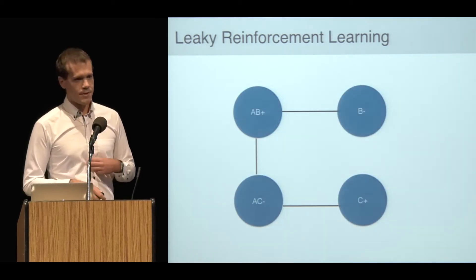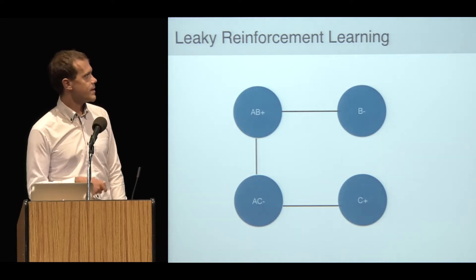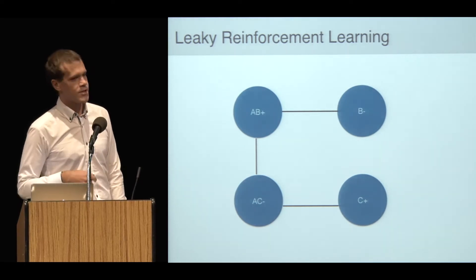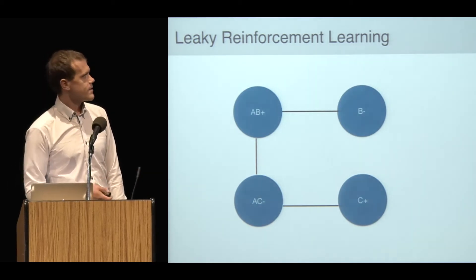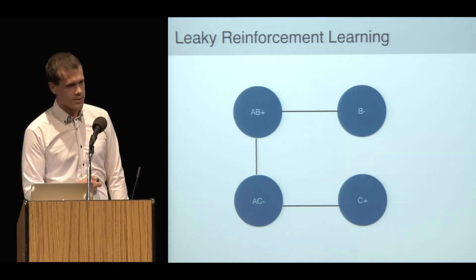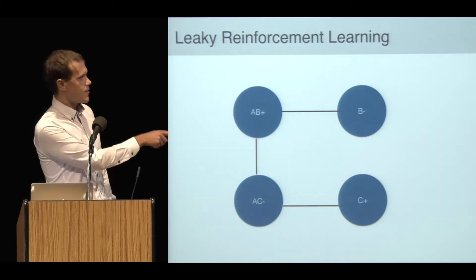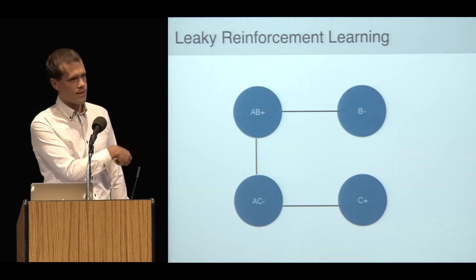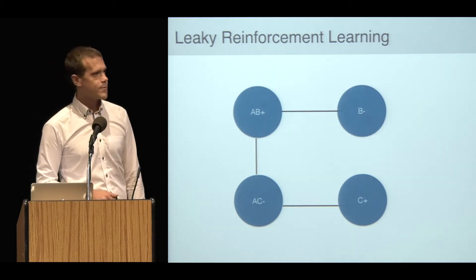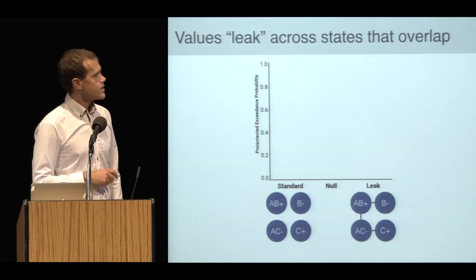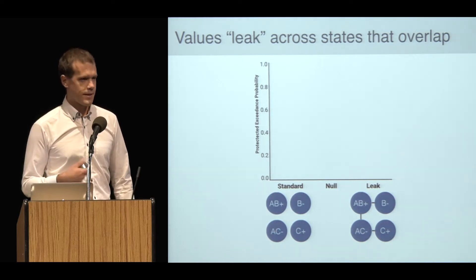You need to keep these conjunctions and features separate and people might not be that good at that. So to allow for this possibility, I fit a different model that allows value updates to leak between states that share features. For instance, if you're in an AB trial and the target appears, the bulk of that value update will go to AB as it should, but some of it will leak over to AC and B because they share a feature in common.